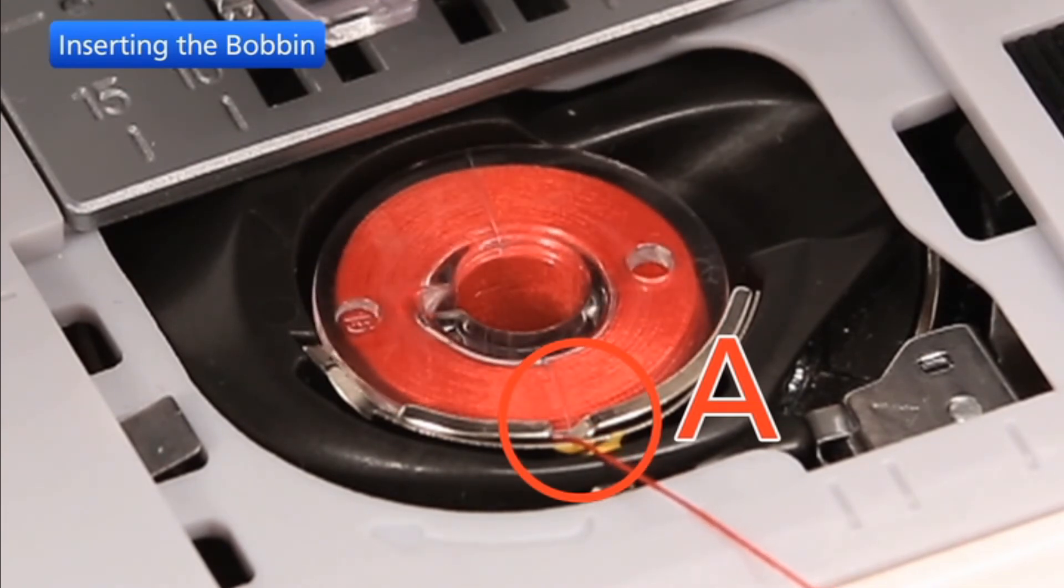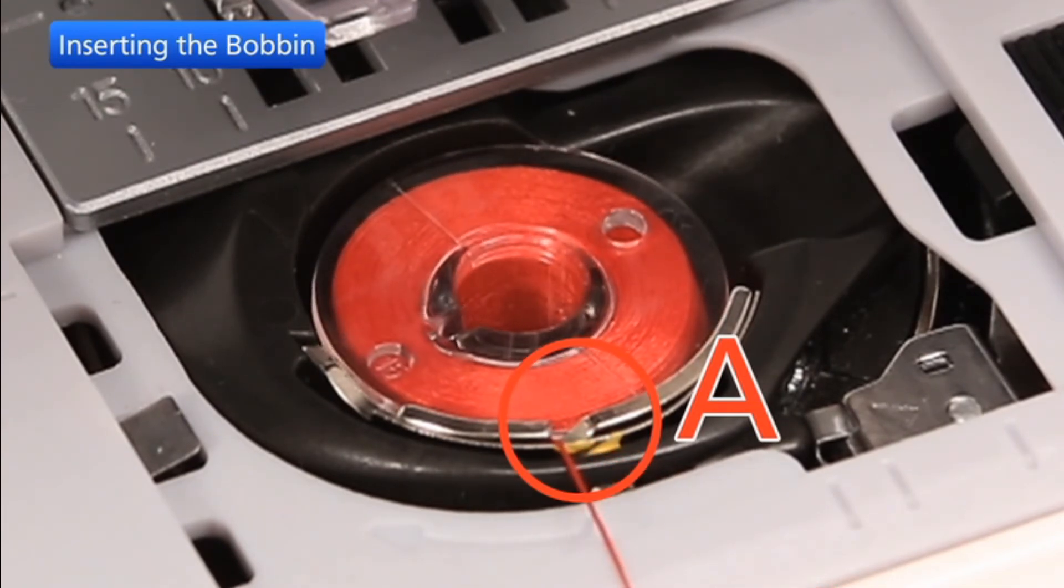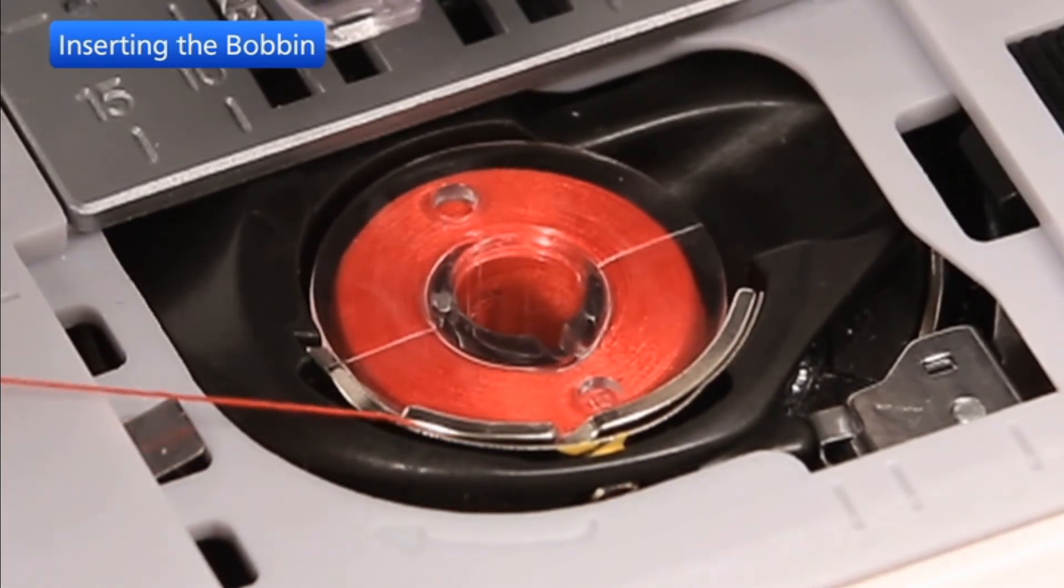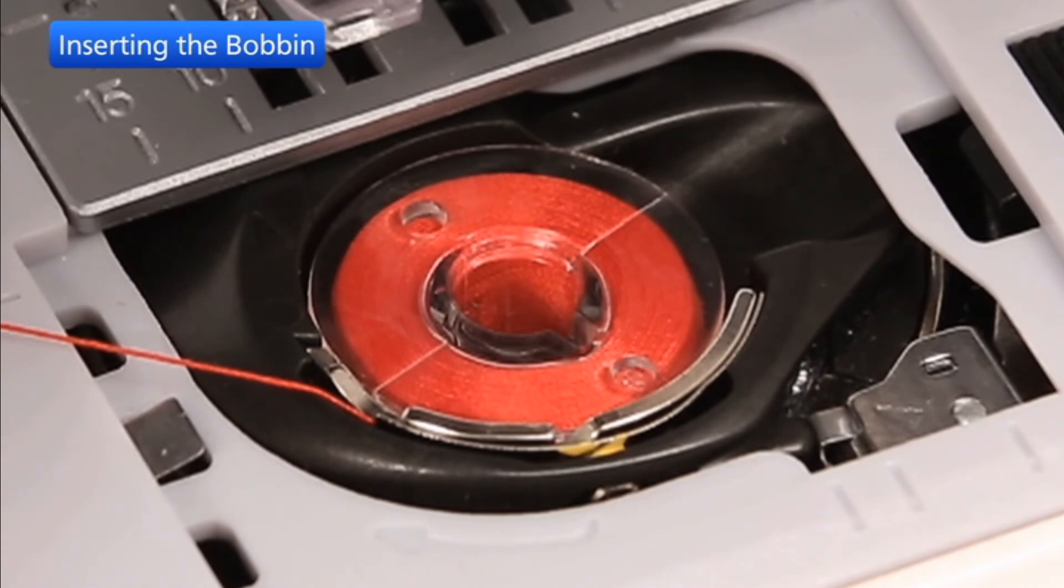Guide the thread into the first notch, A, on the front side of the bobbin holder. Draw the thread to the left, sliding it between the tension spring blades.